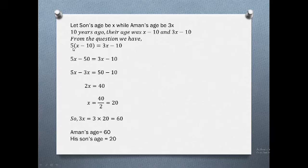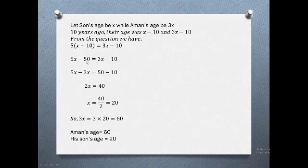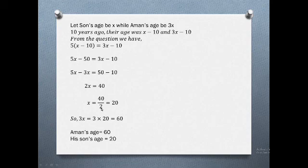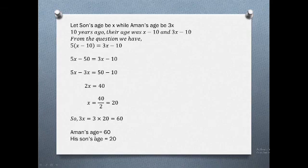So 5x minus 10 equals 3x plus something. Rearranging: 5x minus 3x equals 50, so 2x equals 40, and x equals 40 divided by 2, which gives x equals 20.